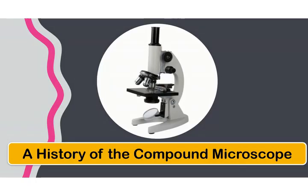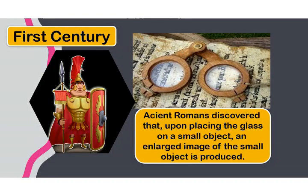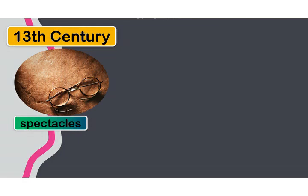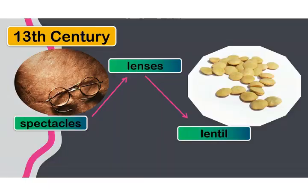Let's discuss the history of the compound microscope. During the first century, the Romans were already experimenting with glasses. One of these involved having a thick middle and thin edges. Ancient Romans discovered that upon placing the glass on a small object, an enlarged image of the small object is produced. Such discovery, however, was not used until the invention of spectacles during the 13th century.